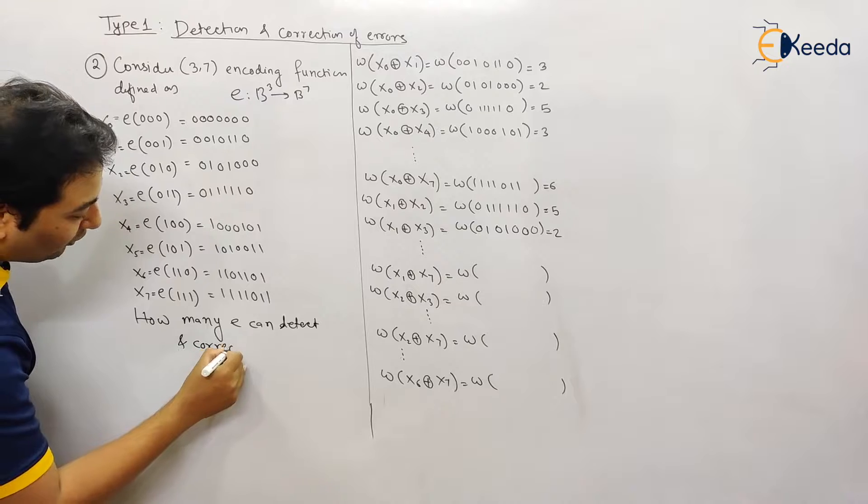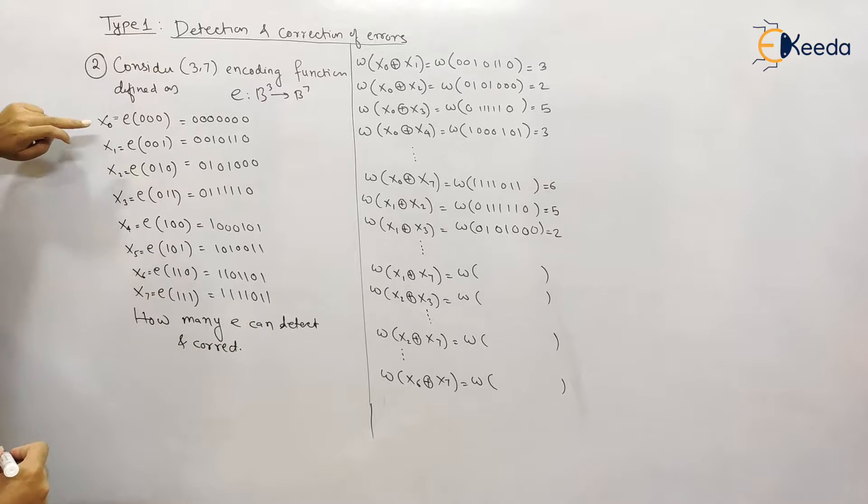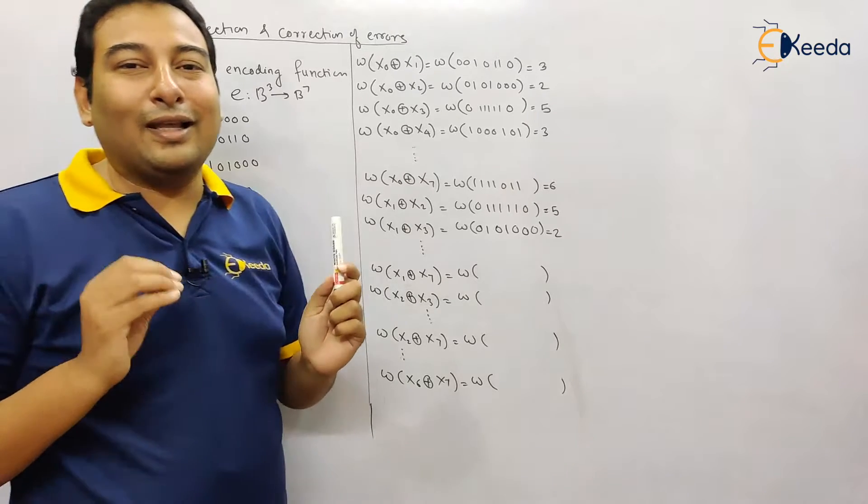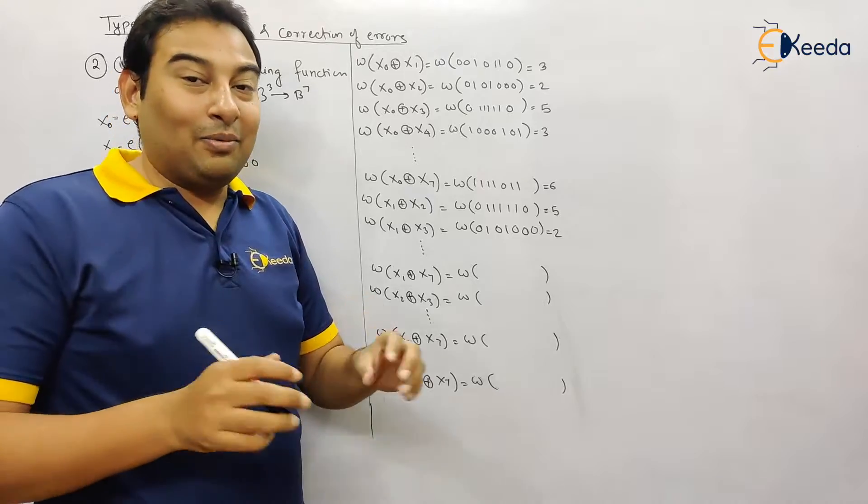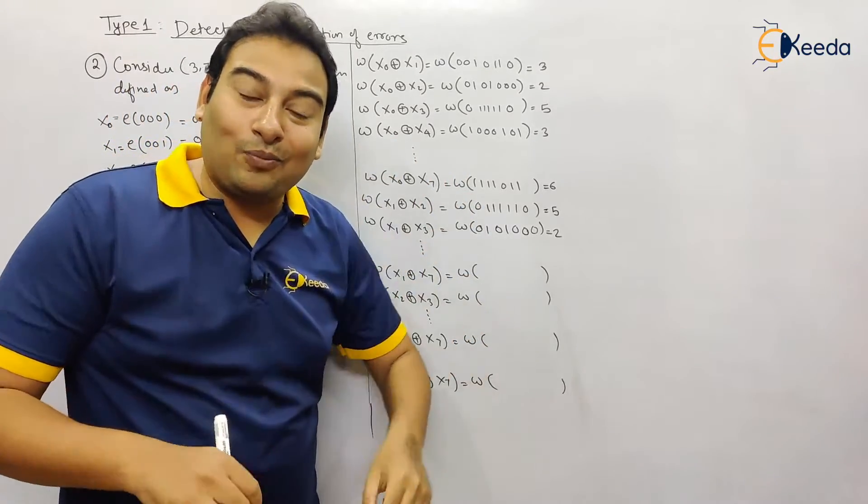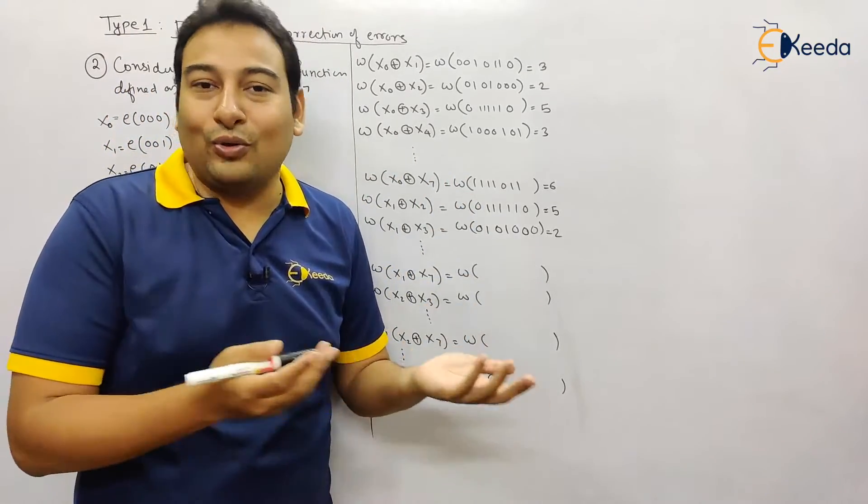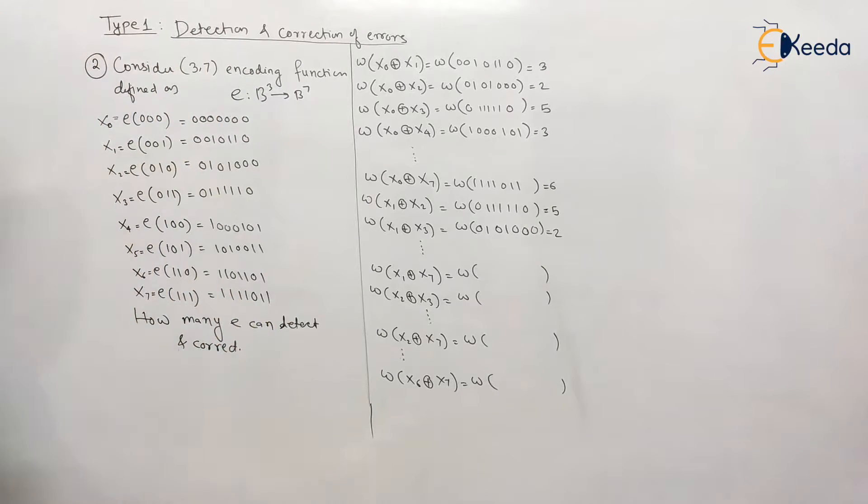For that purpose we know the procedure. Let us assume these codes as x0, x1, x2, x3, x4, x5, x6, and x7. After that there is a very lengthy procedure. Extremely sorry for this, but I don't have any option. You have to do it, so you have to show it in the exam.